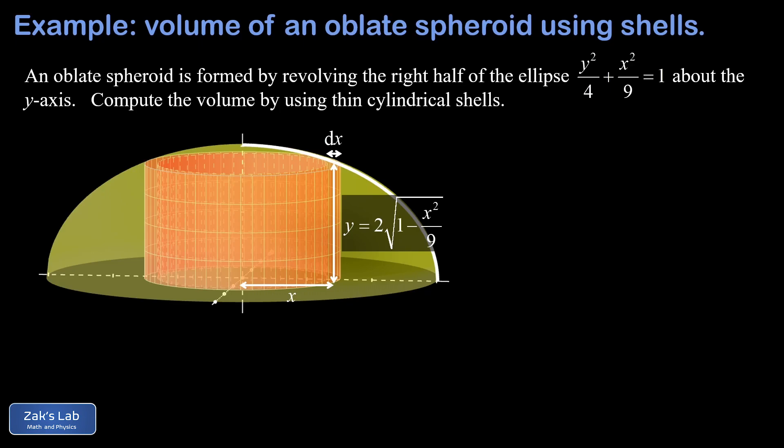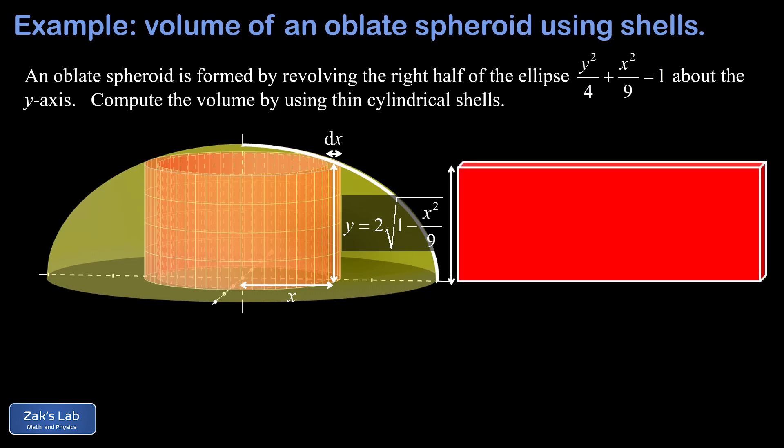Now that we have the dimensions of a representative shell completely labeled, we're going to slice this thing vertically and then unroll it into a rectangular slab. The height of that slab is the exact same y value, 2 square root 1 minus x squared over 9. The thickness of the slab is the same thing as the thickness of the shell wall, and that's our incremental value dx.